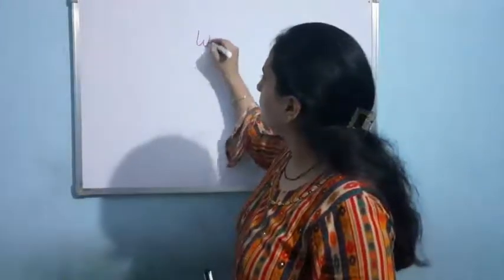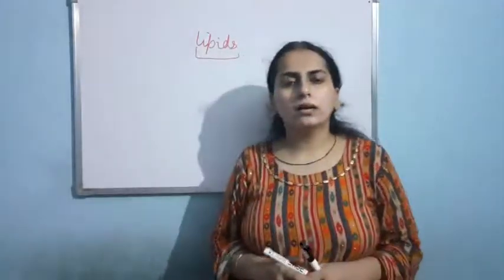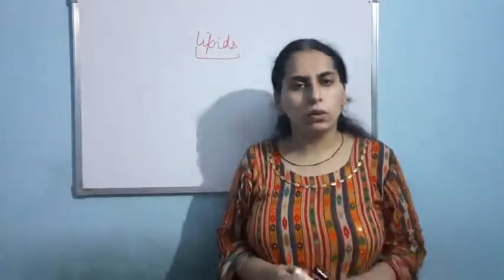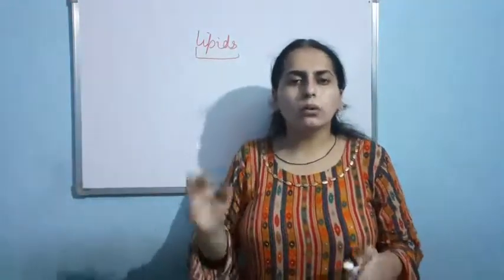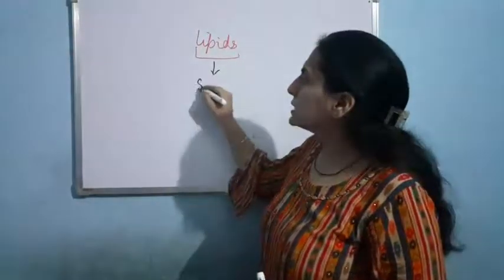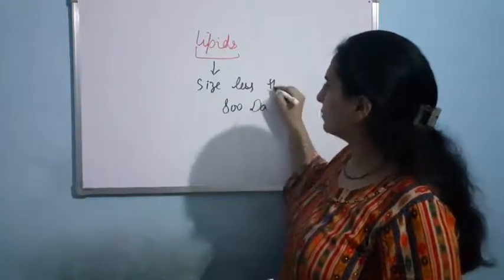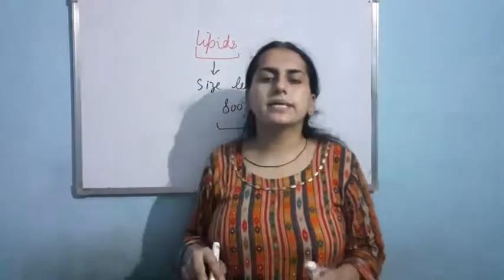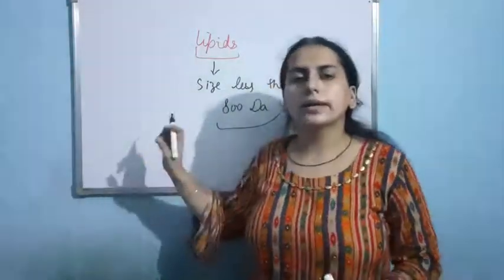Good afternoon everyone. As you know, we were discussing the topic lipids. Lipids are basically water insoluble and these are categorized as bio micro molecule. Why are they known as bio micro molecule? Because their size is less than 800 dalton. So that's why they are categorized as bio micro molecule and these are generally water insoluble.